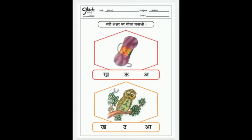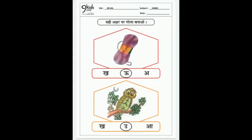You have to circle O. O say, Oon. Oon. And below, U. O say, Ullu.